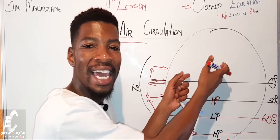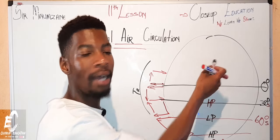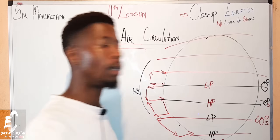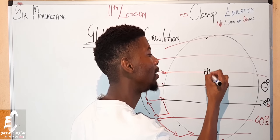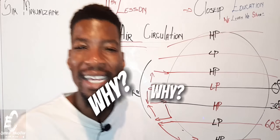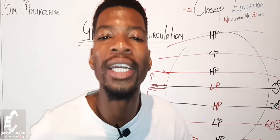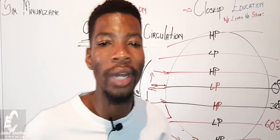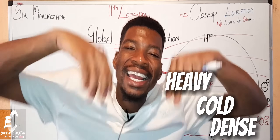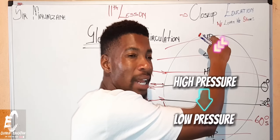The same pattern that occurs in the southern hemisphere repeats in the northern hemisphere — high pressure, low pressure, high pressure. Cold polar areas have high pressure because they receive no direct insolation, so the air is heavy, cold, dense, and always sinking. We know that air moves from high pressure to low pressure.